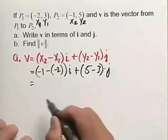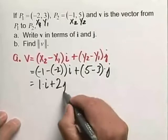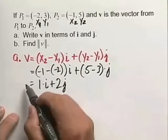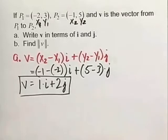So when we clean this up, negative one plus two will give us one times i, plus two j. And so we've done it. We now have our vector V in terms of i and j.